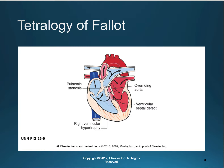Think about those anatomical descriptions and what this child might have in their clinical manifestations. You can see the mixing of deoxygenated and oxygenated blood. If deoxygenated blood is going through the aorta, then that child is going to be cyanotic and have hypoxia. Patients are at risk for emboli, loss of consciousness, and sudden death.